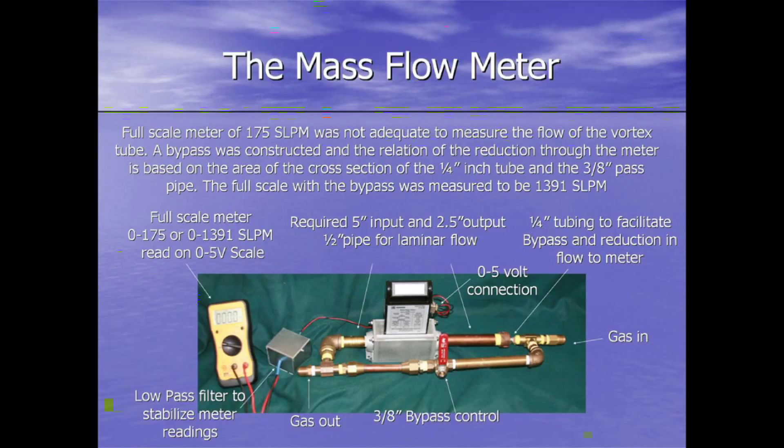Any experiment is dependent on the meters that are used or the measuring equipment, and this is no exception. I obtained a Sierra Instruments mass flow meter, which was just recently calibrated and is accurate within 1.5% of full scale. However, unfortunately it only ran 175 standard liters per minute, and I needed something somewhere around 400 to 500.